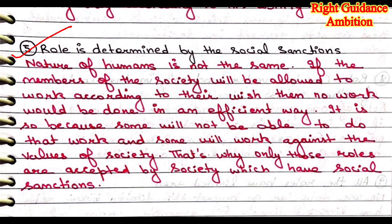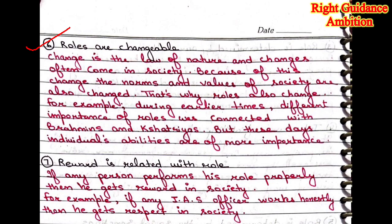If society doesn't accept our role, we will automatically change our behavior with time. Sixth part is: roles are changeable. Change is the law of nature; no society or place is static, and changes often come with time. Because of these changes, the norms and values of society are also changed. In India, we were living in a very traditional way, but now modernization has brought change, which is why our value system has also changed in society.